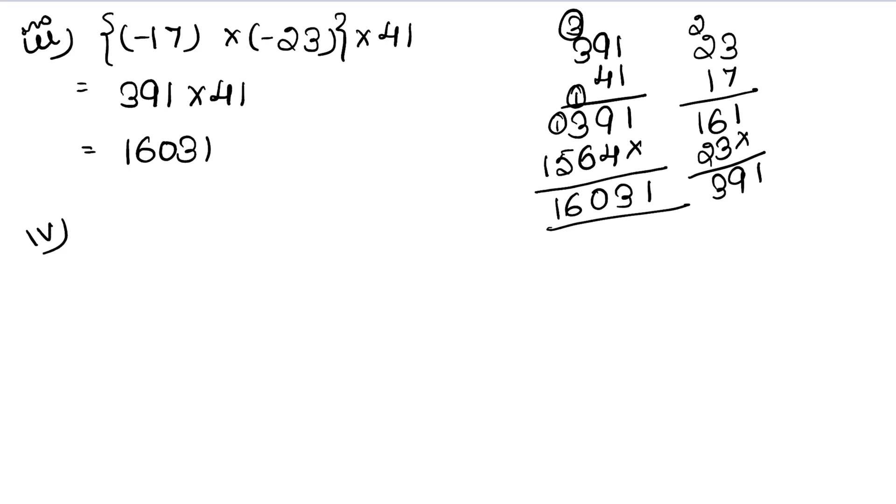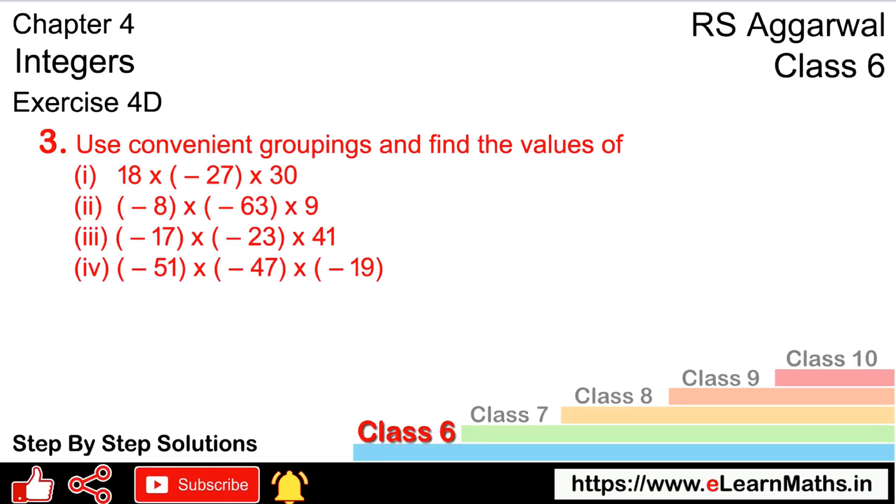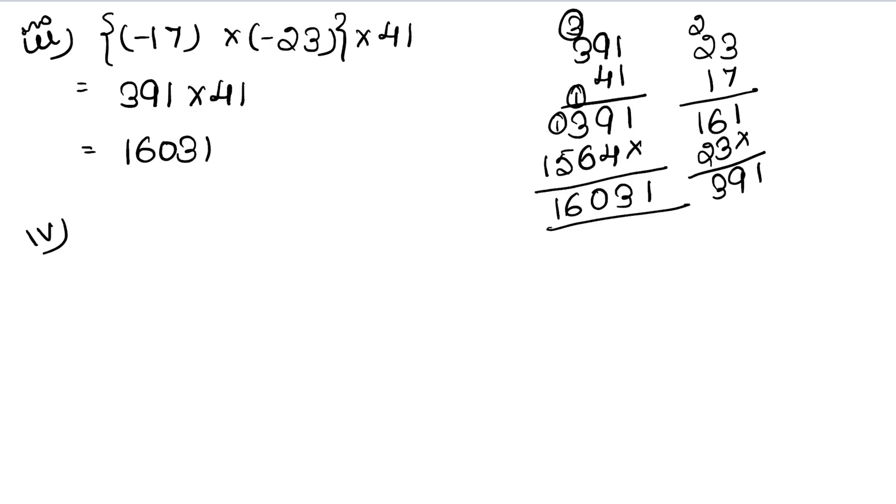Fourth part, the last part: (-51) × (-47) × (-19). This has three negatives, so we can take two groups together. I've taken 51 and 47 together. Minus minus equals plus. Now 51 × 47: 7×1 is 7, 7×5 is 35. Then 4×1 is 4, 4×5 is 20. This gives us 2397.